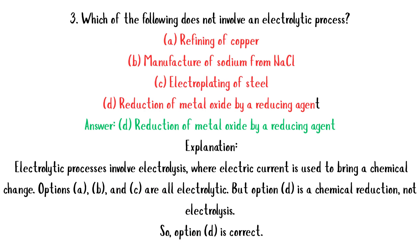MCQ 3: Which of the following does not involve an electrolytic process? A. Refining of copper. B. Manufacture of sodium from NaCl. C. Electroplating of steel. D. Reduction of metal oxide by a reducing agent. Answer: D. Explanation: Electrolytic processes involve electrolysis, where electric current is used to bring a chemical change. Options A, B, and C are all electrolytic. But option D is a chemical reduction, not electrolysis. So option D is correct.